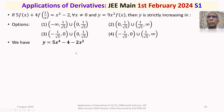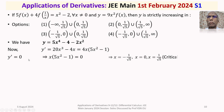For the increasing/decreasing nature, we compute y' = 20x³ − 4x = 4x(5x²−1). Setting y' = 0 gives critical points x = 0, x = −1/√5, and x = 1/√5. Writing these in increasing order on the number line: −1/√5, 0, 1/√5.